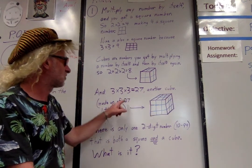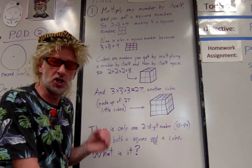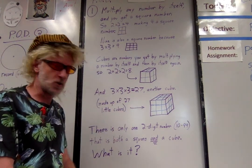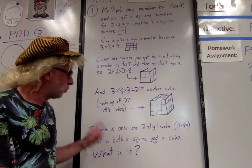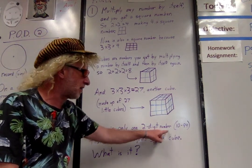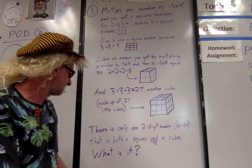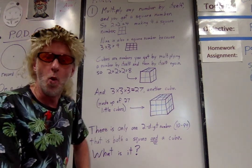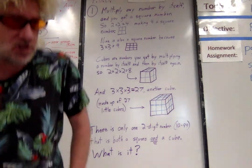This big cube is made up of 27 little cubes. So the question everybody is there's only one two-digit number, that means it's between 10 and 99, that's both a square and a cube. What is it?